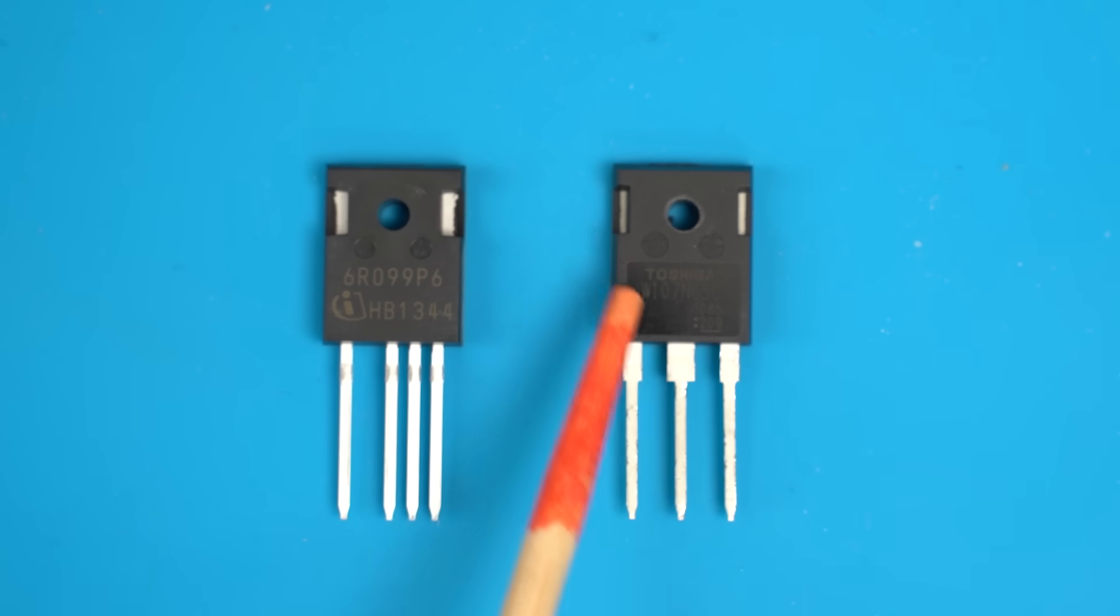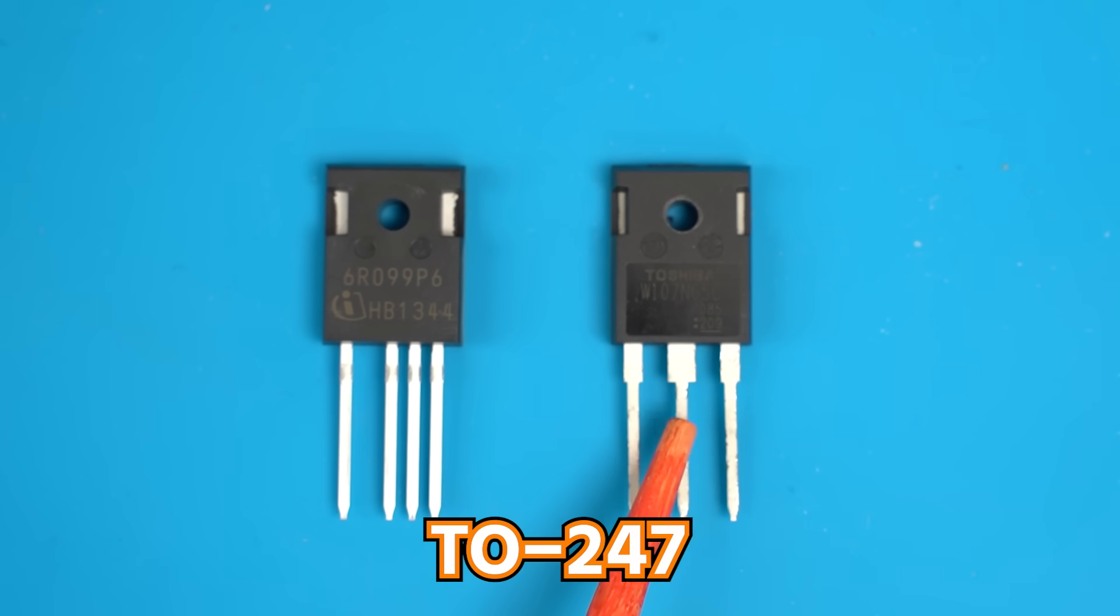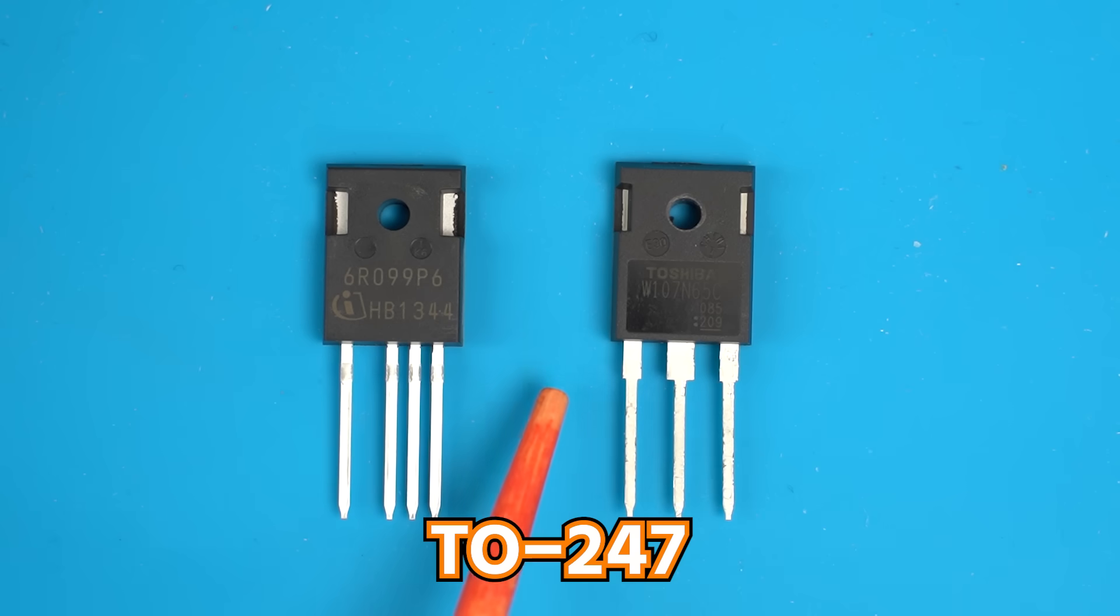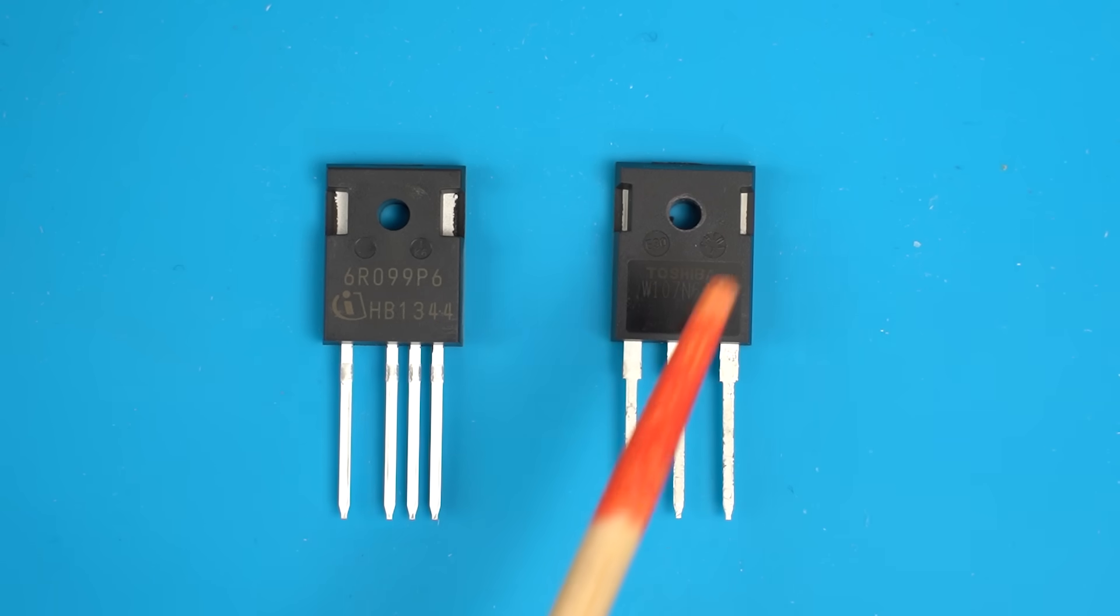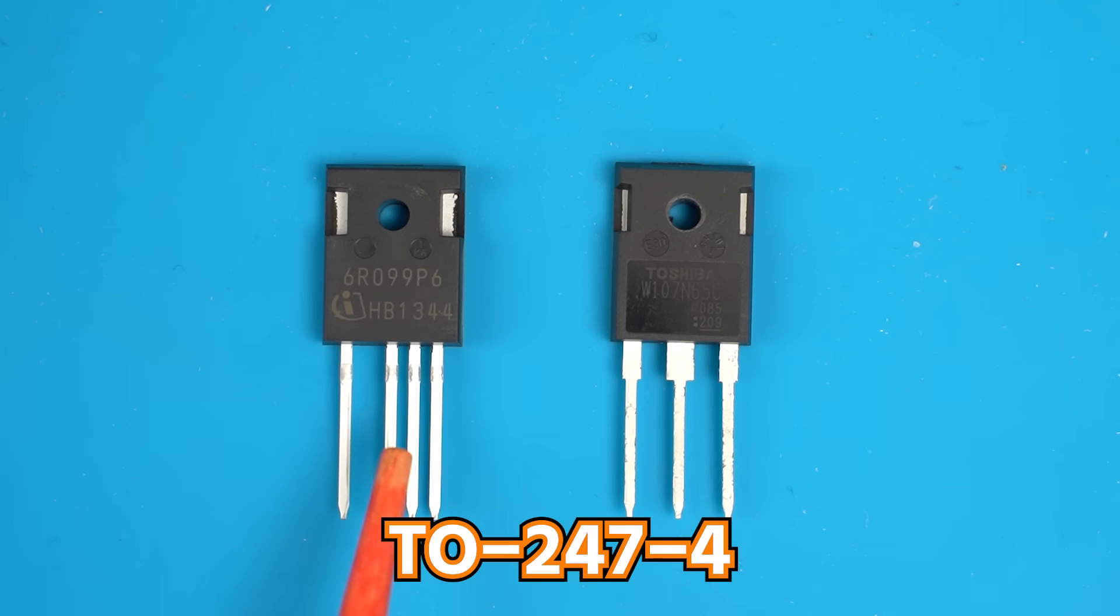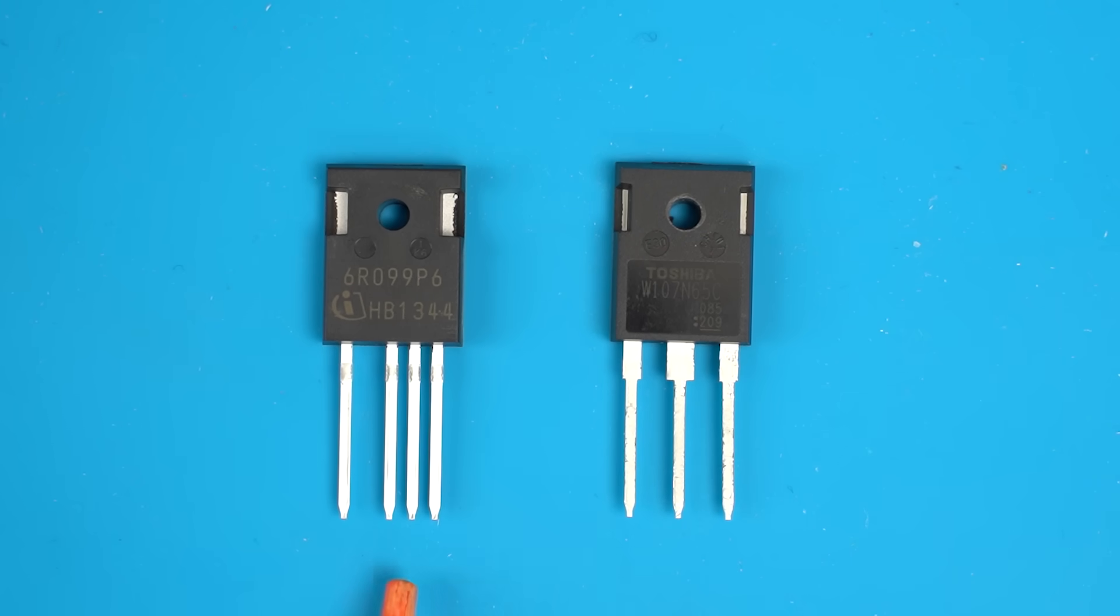The one on the right side is the power semiconductor package with three leads. It's called TO247. This is a common type of discrete semiconductor package. The package on the left side has four leads. I looked up its name. Apparently it's a package called TO247-4. As you can see, it's got four leads instead of three.